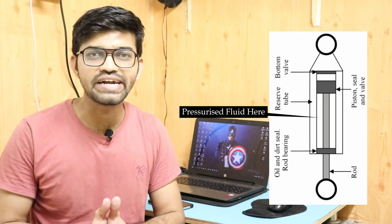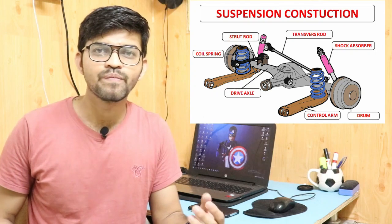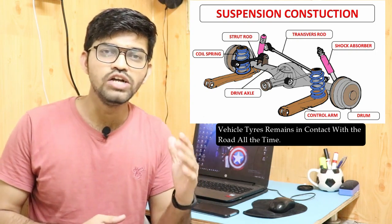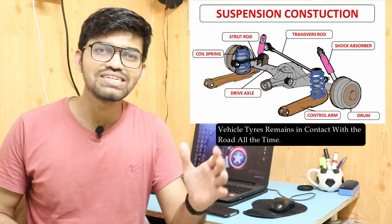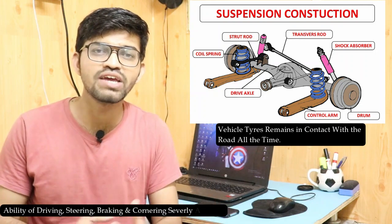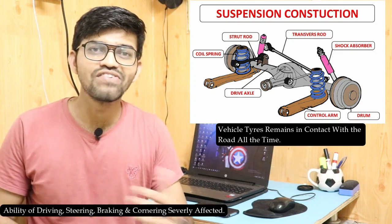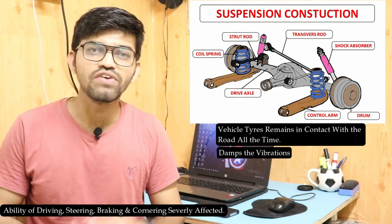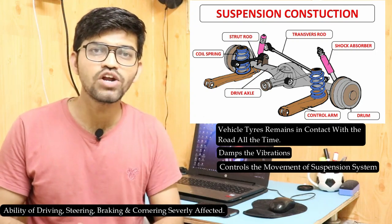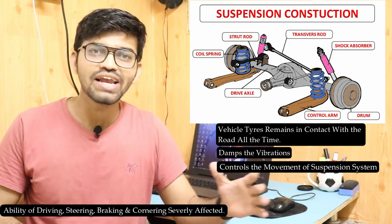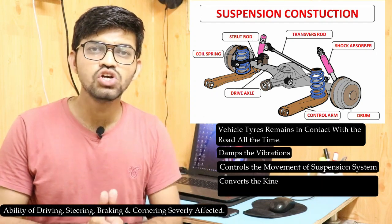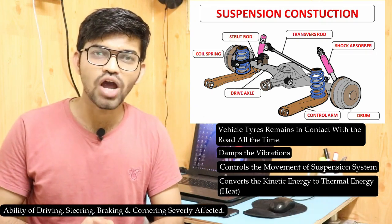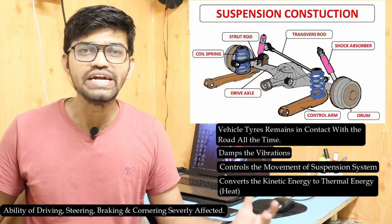The shock absorber is the heart of any suspension system. Its main purpose is to ensure that the wheels remain in contact with the ground. If the wheels lose contact, the ability of steering, braking, and acceleration are all severely affected. The shock absorber also controls the vertical movement of the suspension and, in engineering terms, converts the kinetic energy of the suspension into heat, which is then dissipated to the outer atmosphere.